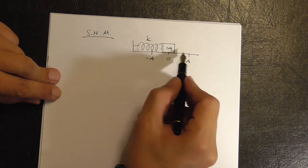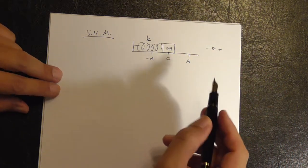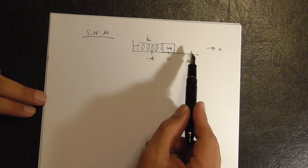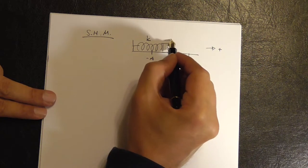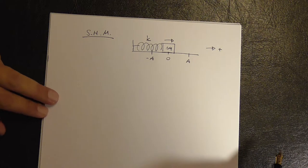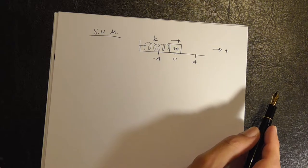So this oscillates back and forth between these positions. Take everything to the right to be positive because we know displacement is a vector, velocities are a vector and we need to know the direction, which one is positive, which one is negative.